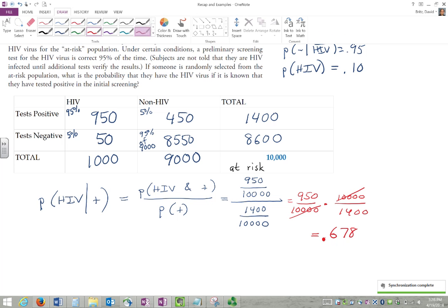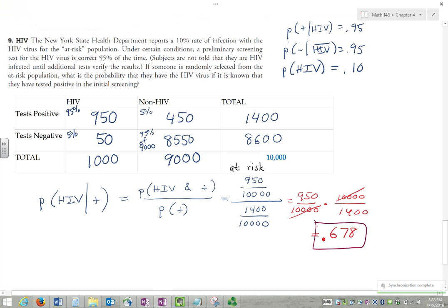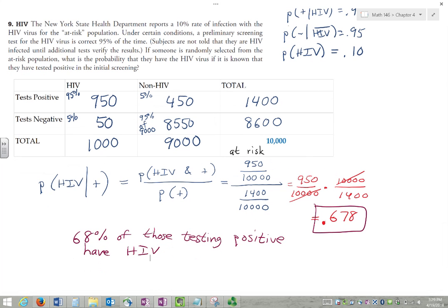So another way of thinking of this is that about 68% of those testing positive have HIV, so about two, this is actually a rather high number.